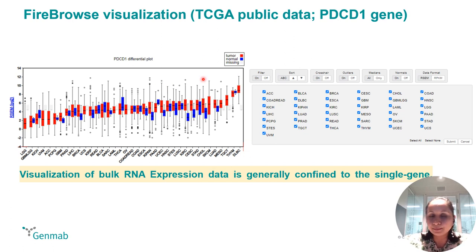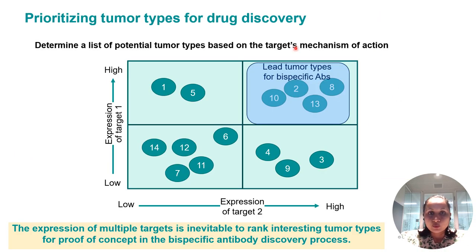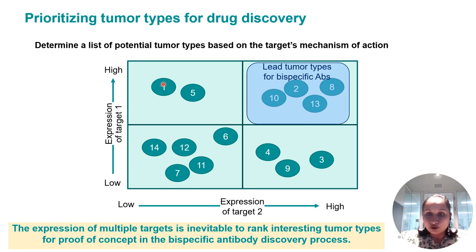Here, one can easily pick the tumor types that have high expression of the gene, but what I'm missing here is count of samples or statistical differences between normal and tumor samples. Additionally, if you want to look for lead tumor types for bi-specific antibodies, where we would like to visualize the expression of multiple genes or gene versus pathway — for example, in pathway-based monoclonal antibodies — then these tools fall short.